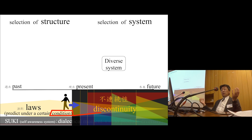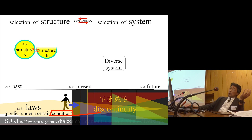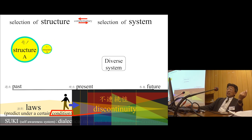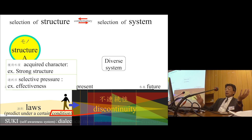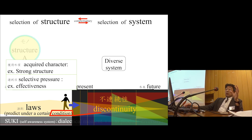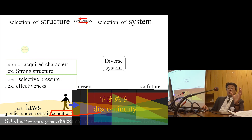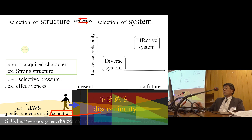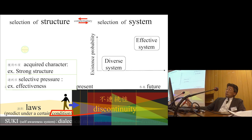I feel that there are two kinds of selections. What is the selection of structure? If there are two structures, and if structure A is stronger, then the acquired structure is a strong structure. Maybe it's effective if something like this exists. But as you know, if the weak disappears, then the strong is also disappeared. They have some relationship.